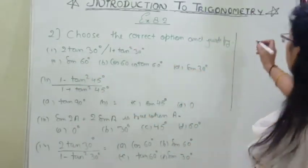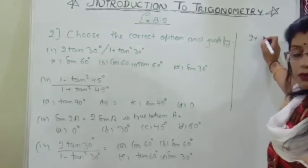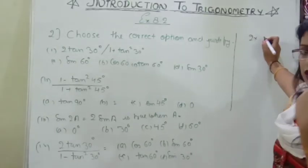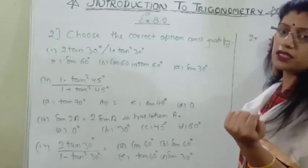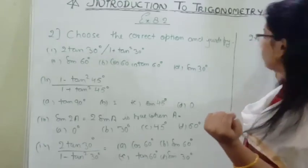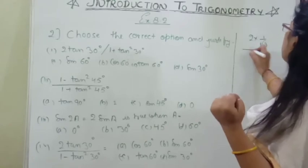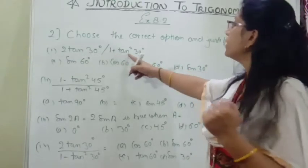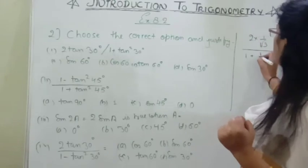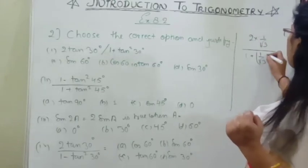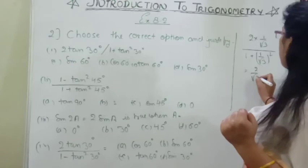2 into tan 30°. Tan 30° means sin 30° upon cos 30°. Sin 30° is 1/2 and cos 30° is √3/2, so we get 1/√3. This is divided by 1 plus tan² 30°. 1 plus tan 30° squared is 1/√3 whole square, so the numerator becomes 2/√3.